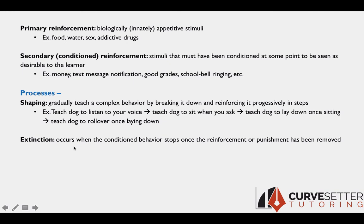Shaping is when we gradually, in steps, teach an animal to perform a complex behavior by breaking it down and reinforcing it progressively. To teach a dog to roll over, we train it in steps: first listen to our voice, then sit when asked, then lay down once sitting, then roll over once it's laying down. We gradually shape the complex behavior through successive reinforcement.